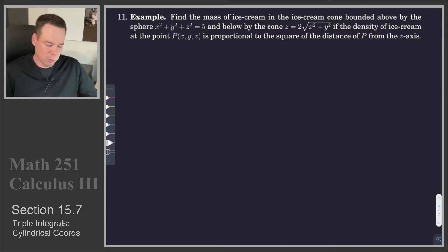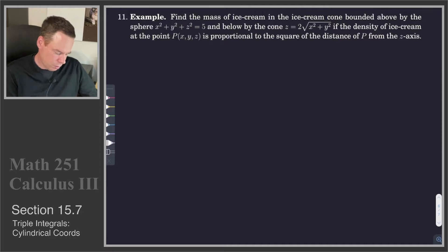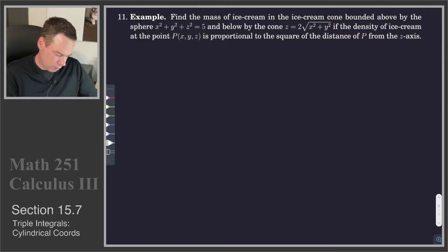For our last example we're going to find the mass of the ice cream in this cone, which is the region bounded between a cone and a sphere, and we're given a density function. The density is proportional to the square of the distance from the z-axis. So let's get a sketch of this region.